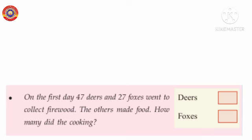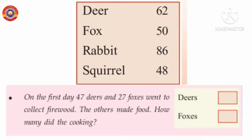Children, we know in the cooking team there are 62 dears, 50 foxes, 86 rabbits, and 48 squirrels. Here, total number of dears equals 62. Number of dears went for collecting firewood equals 47.